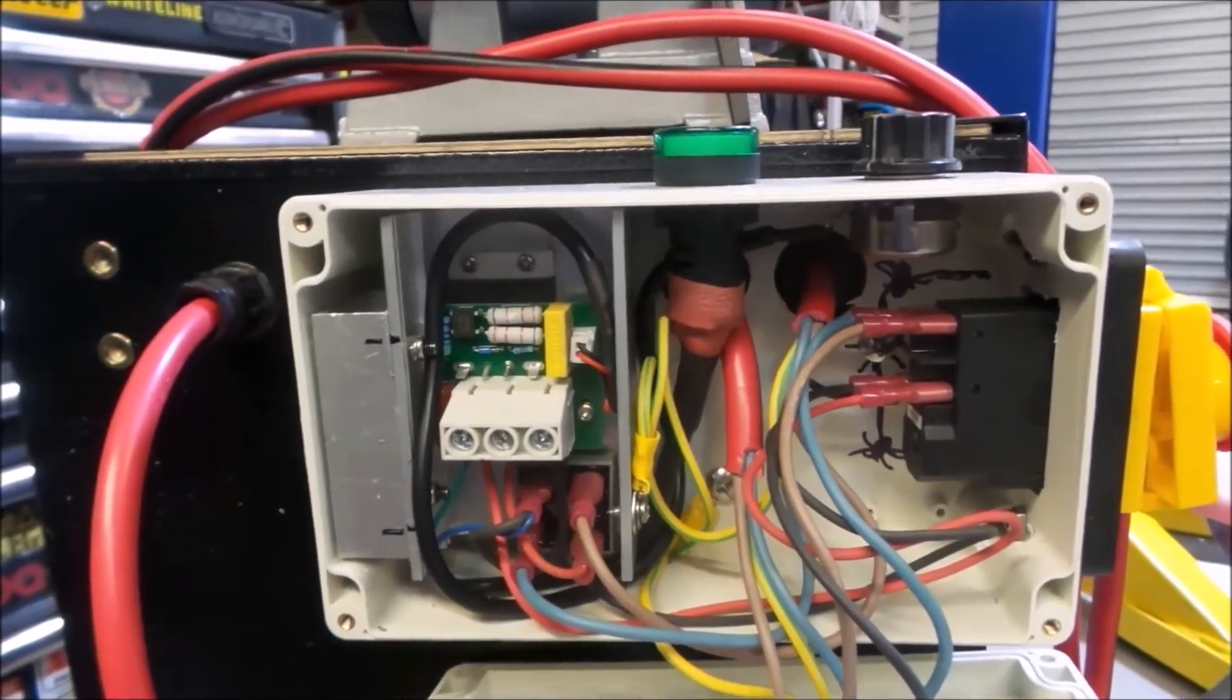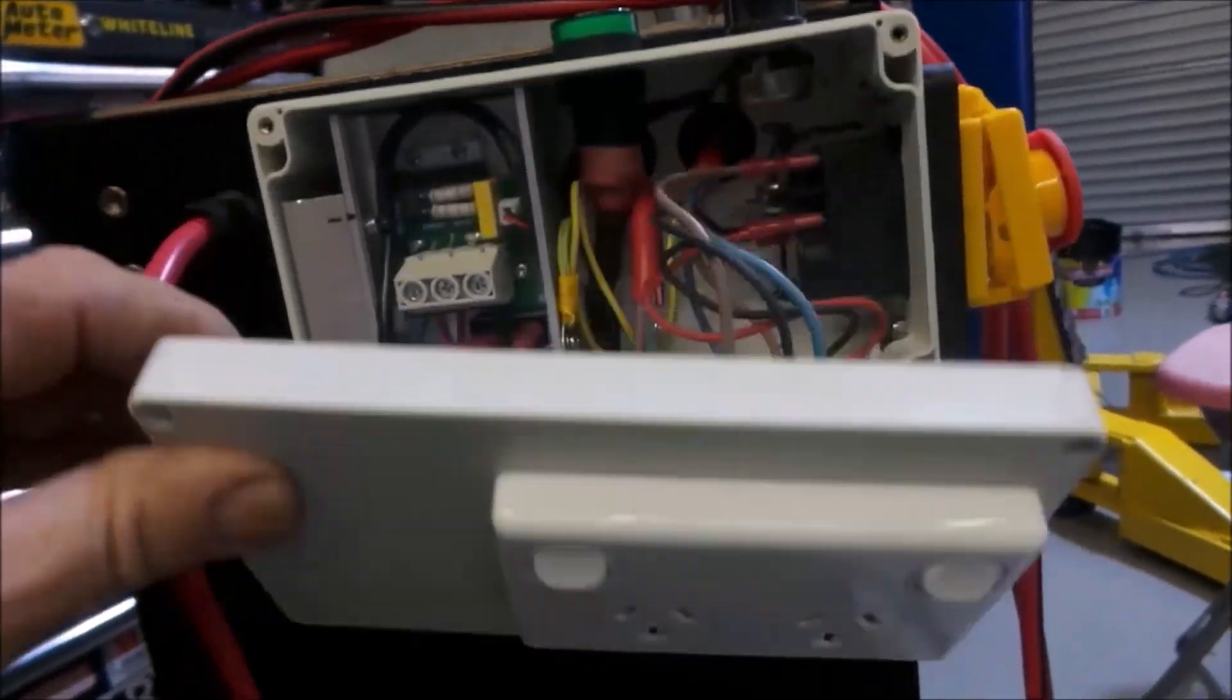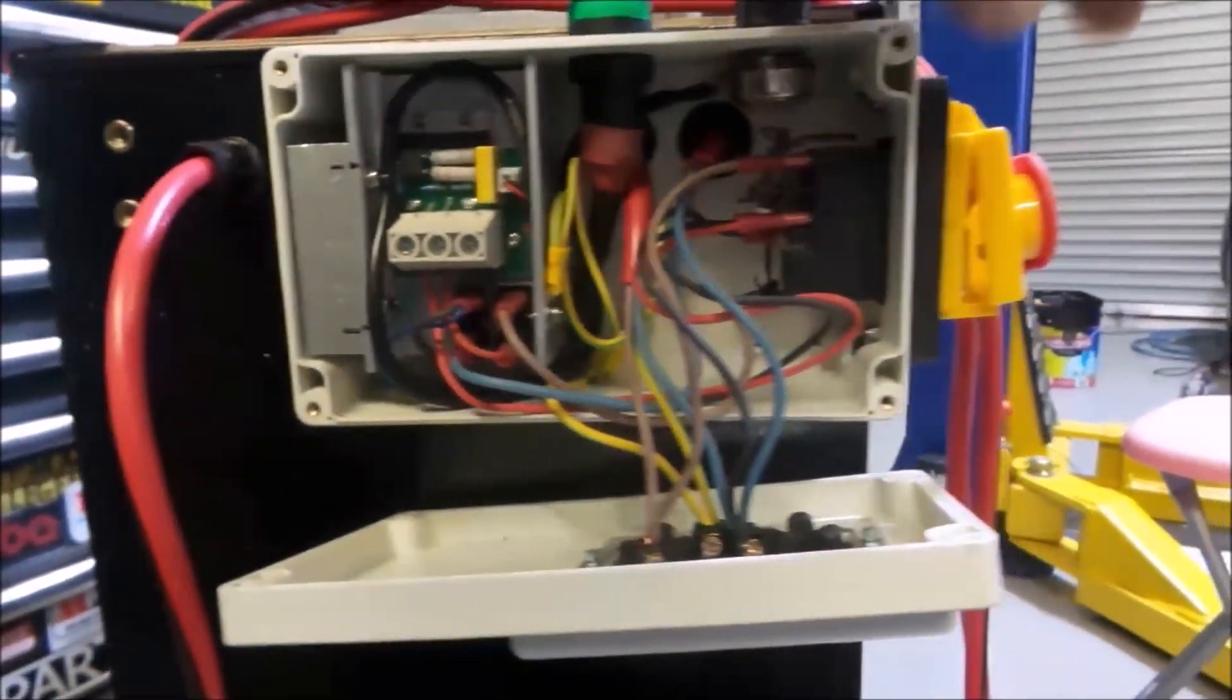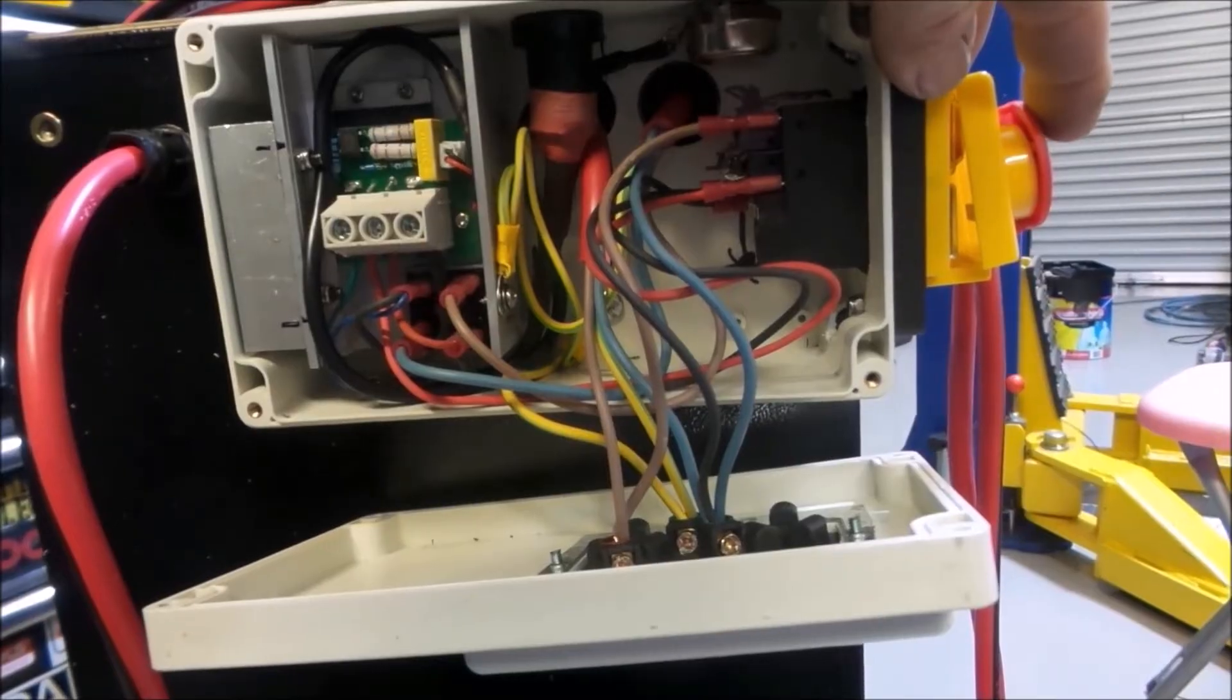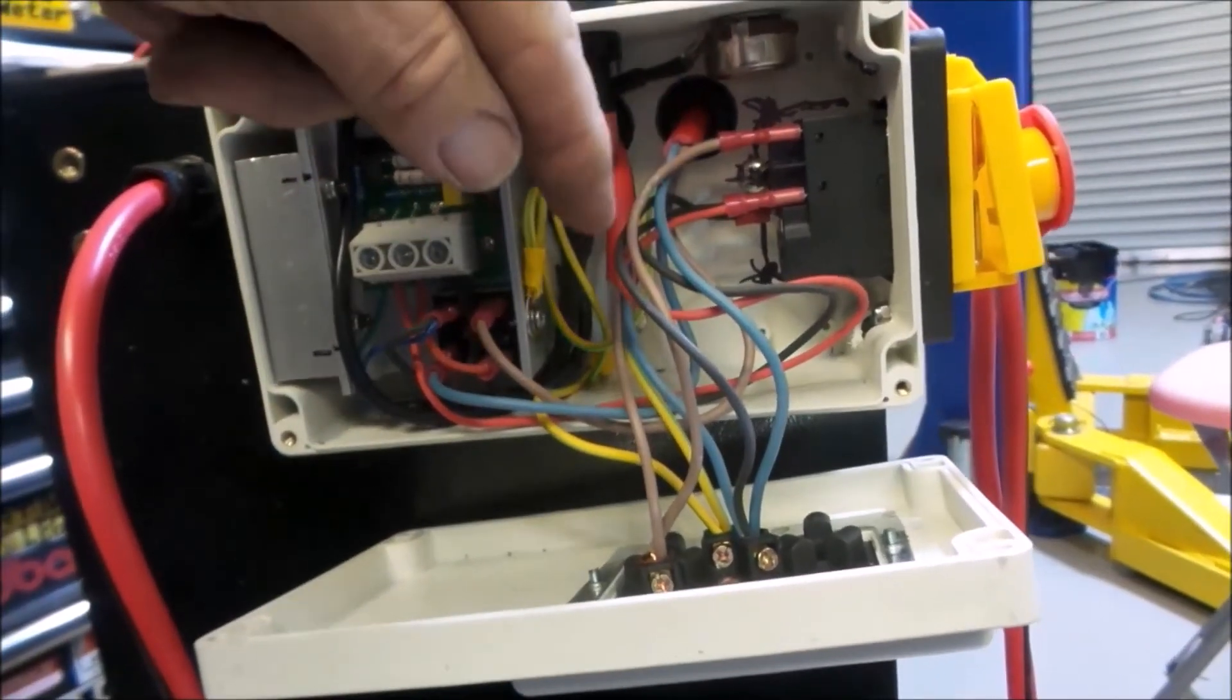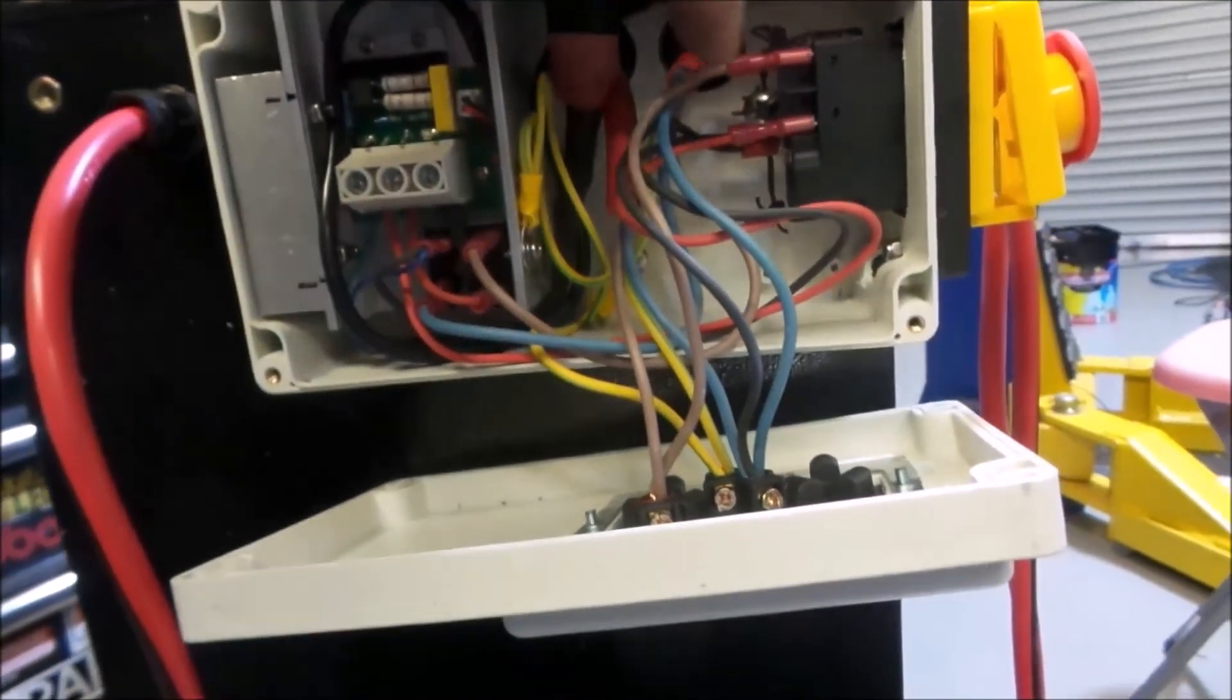So yeah, that's the whole unit there. As I mentioned, I've put a power point on here as well. When the machine's plugged in, that power point becomes active. It's not switched with the emergency stop here. I could have switched it quite easily that way by running the power input to the switch first and then to the power point. I've actually done it the other way: power point first, and then to the switch, and then out to the motor controller.